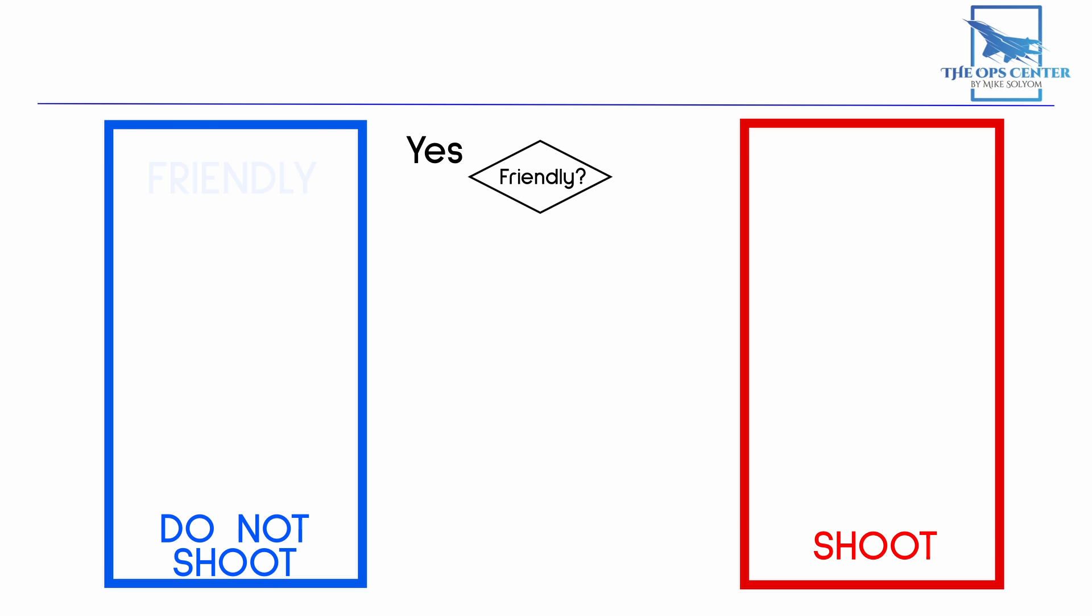It starts off with a question asking, does this contact have any friendly, electromagnetic, or procedural indicators? This is where you'll typically see IFF systems used to quickly identify a friend. If the answer to this question is yes, then it will be marked as friendly and sent out as a green circle on the data link network. We'll also move it out here to the Do Not Shoot column.